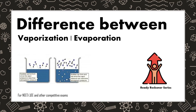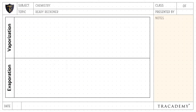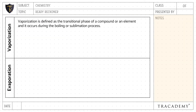In this video, let's understand the difference between evaporation and vaporization. Vaporization is defined as the transitional phase of a compound or an element, and it occurs during the boiling or sublimation process.